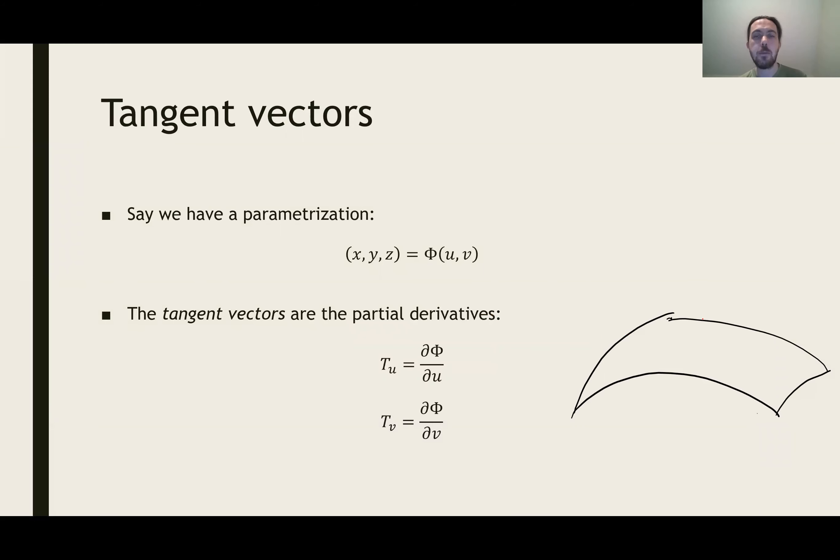So let's talk about these tangent vectors. These tangent vectors are the partial derivatives of phi with respect to the u variable and the v variable. And sometimes for shorthand, I'll write those as tu and tv, meaning the tangent vector in the u direction and the tangent vector in the v direction.